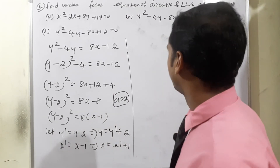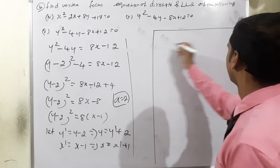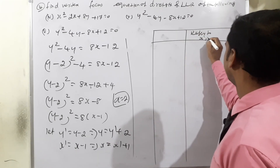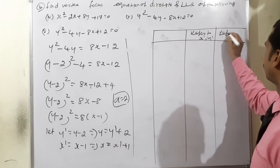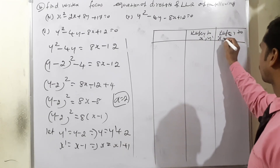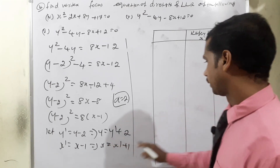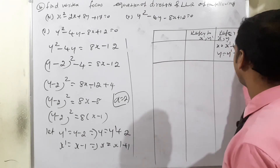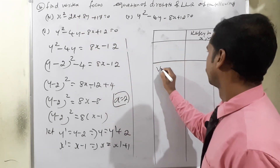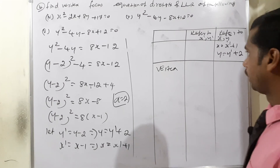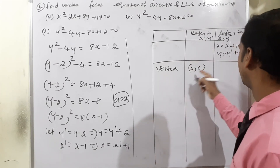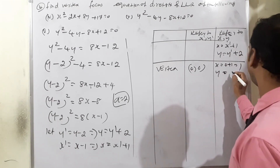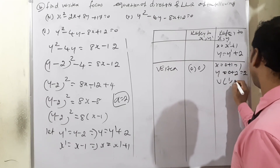Setting up the table: x = x' + 1 and y = y' + 2. For vertex in x'y': (0, 0). So x = 0 + 1 = 1 and y = 0 + 2 = 2. Therefore vertex in xy is (1, 2).